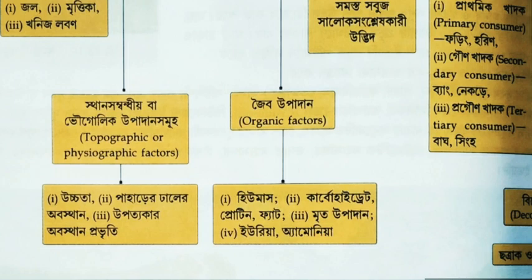The organic factor is very important. The first organic factor is humus. Humus is composed of carbohydrates, proteins, fats, and other materials involved in the leaching process. If ammonia or ammonification is present, you will have organic factors.